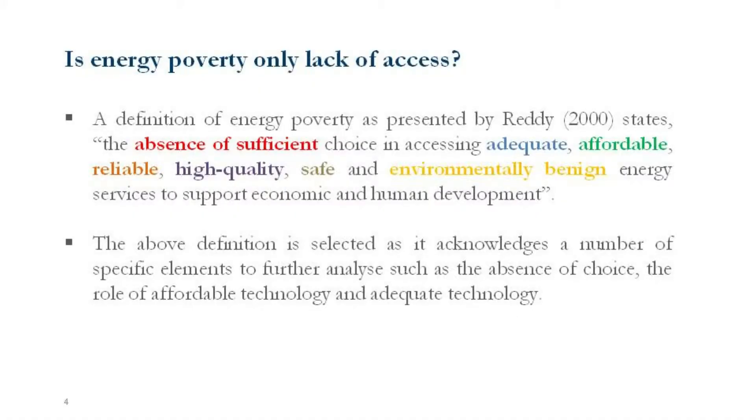We think of access to electricity as one demonstration of energy poverty, but energy poverty is more than just access to electricity. A definition I always like — from 2000 — is very inclusive: energy poverty is the absence of sufficient choice in accessing adequate, affordable, reliable, high-quality, safe, and environmentally sound energy services to support economic and human development. It doesn't just say give access to electricity; it talks about quality, safety, and affordability.